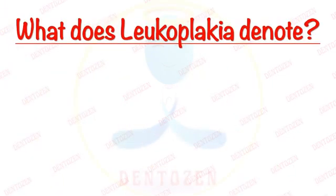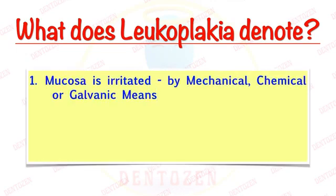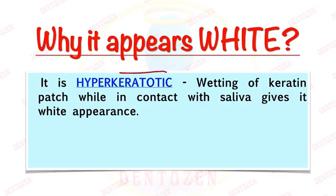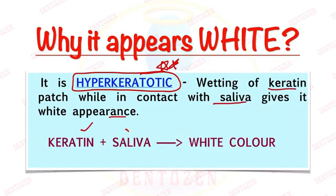What does leukoplakia denote? It means the mucosa is irritated — something is irritating the mucosa by mechanical, chemical, or galvanic means — and the mucosa is trying to adapt by producing more keratin on its surface. Why does it appear white? Because it is hyperkeratotic — there is a lot of keratin. The wetting of this keratin in contact with saliva gives it a white appearance. So keratin plus saliva gives white color.